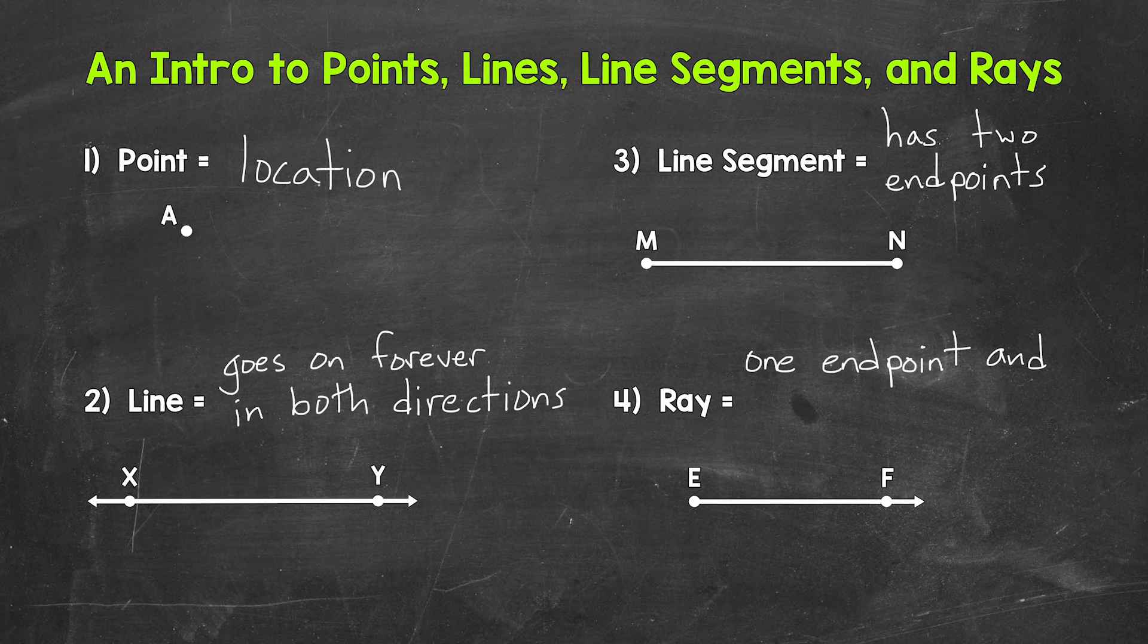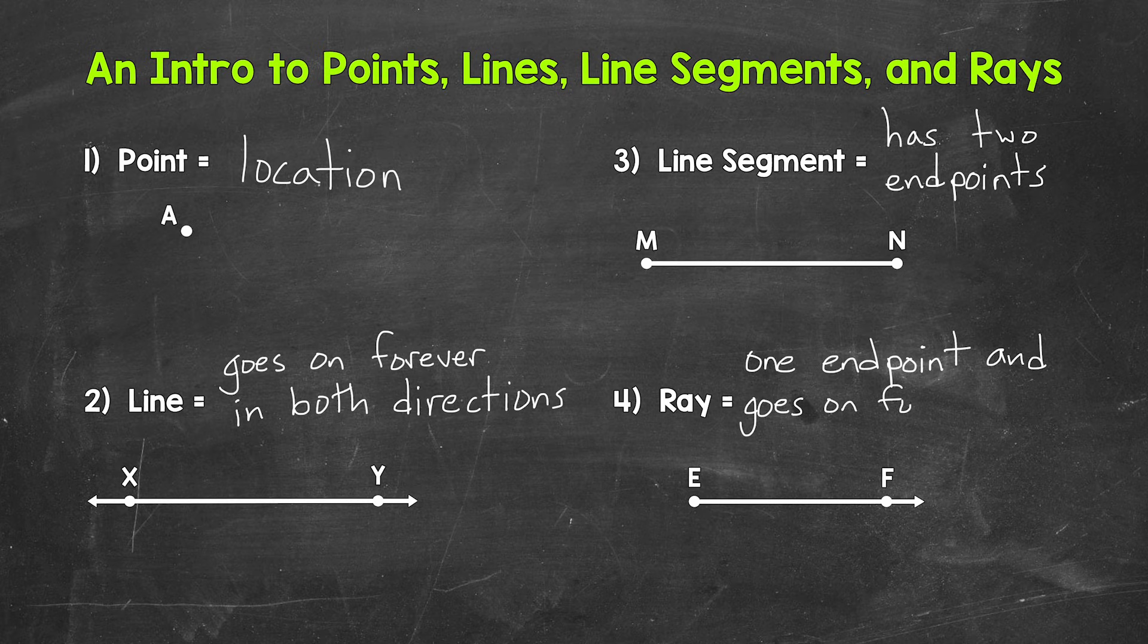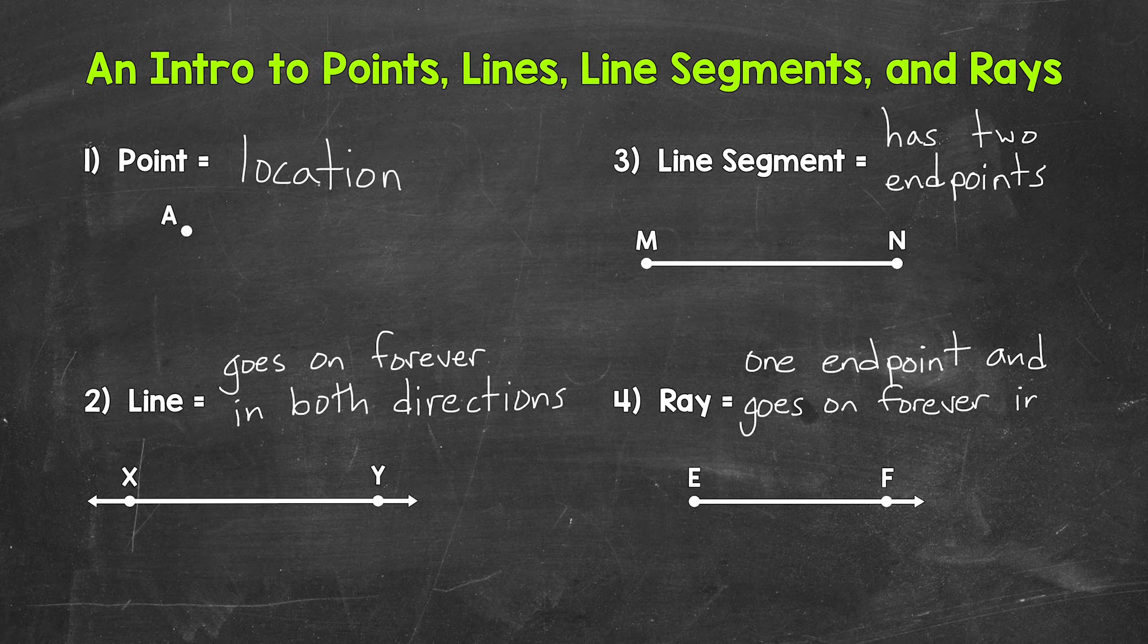For our example, we have ray EF. The endpoint is E, and then it goes on forever in one direction.